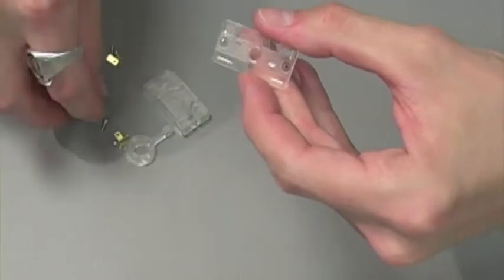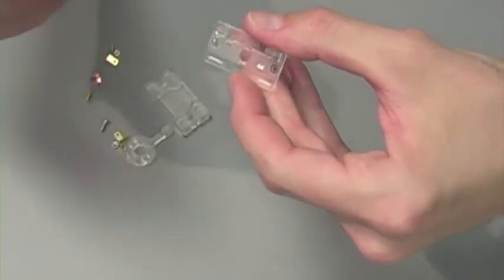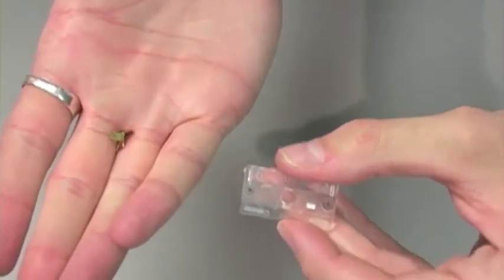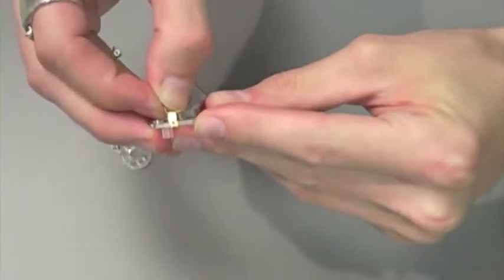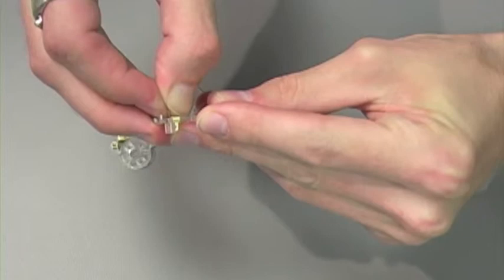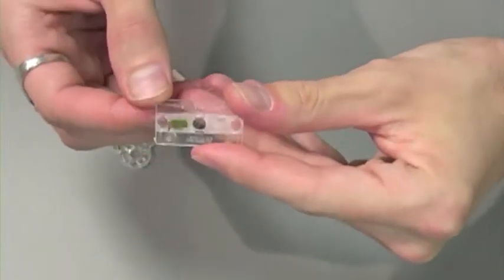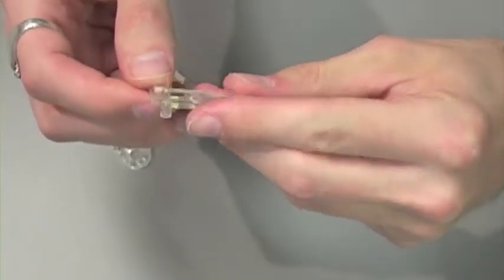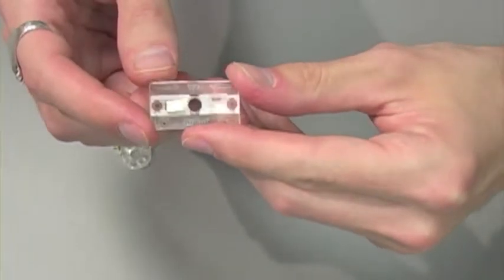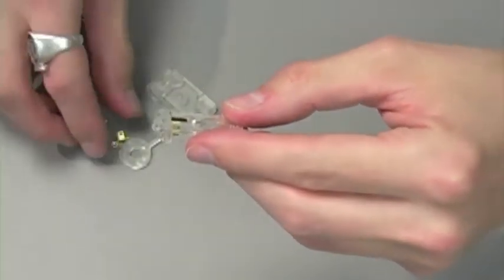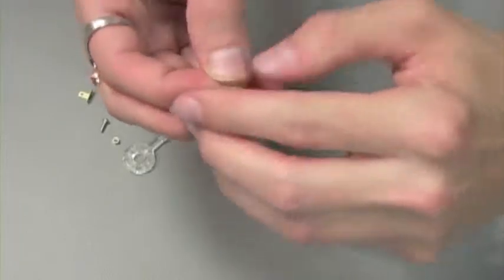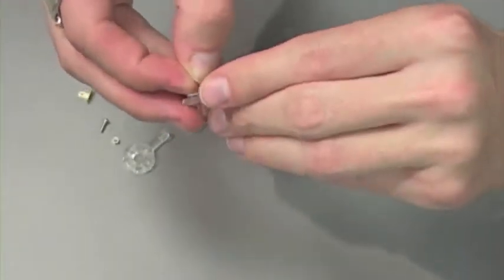Let's begin by taking switch terminal A, which looks like this, and placing it through half of the switch box so that it looks like this. Do the same thing to the other side.